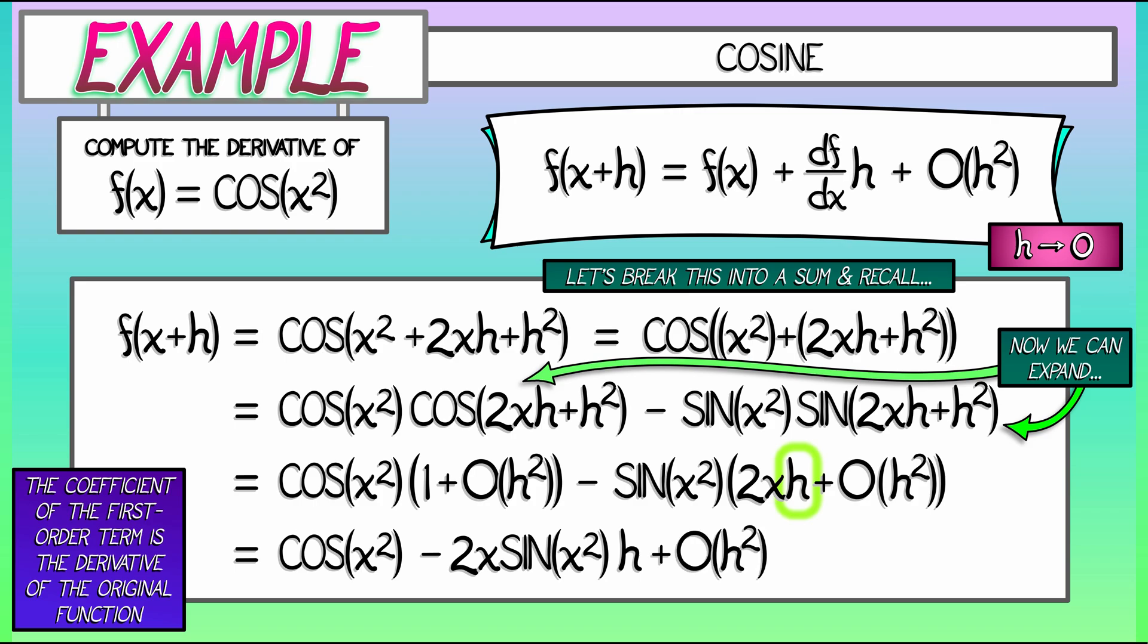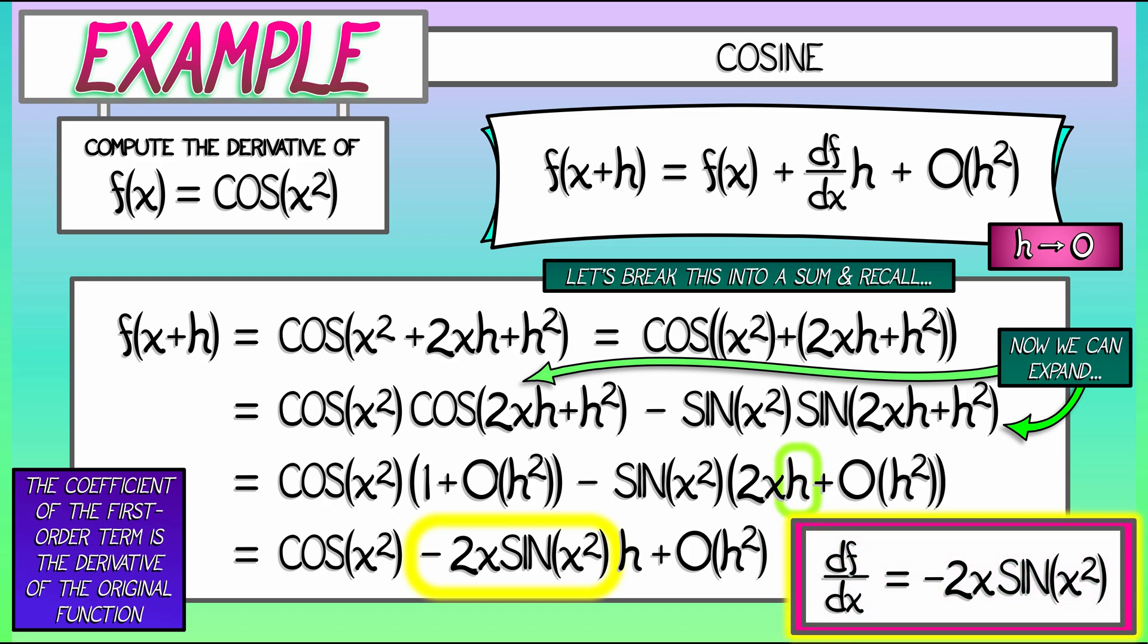Keeping in mind, again, that h is the variable that we care about. That's the thing that goes to zero. Now, as before, we look for the coefficient of the first order term. What's in front of the h? It's negative 2x times sine of x squared. And that, indeed, is the derivative of cosine of x squared.